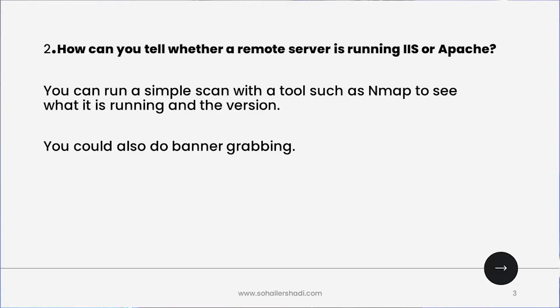The second question might seem a little silly, but you can't believe how many people couldn't answer it during the interview process. The question is: how can you tell whether a remote server is running IIS or Apache? The answer is simple — you can run an Nmap scanner on the server or do banner grabbing. That's it.